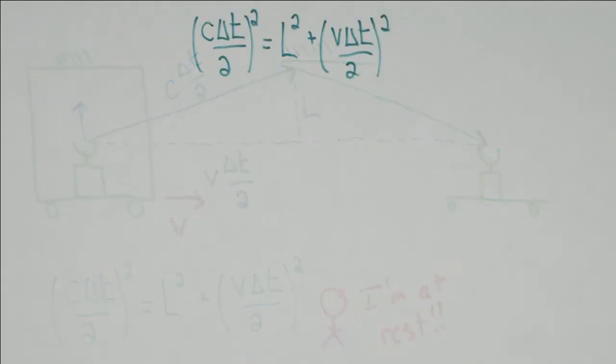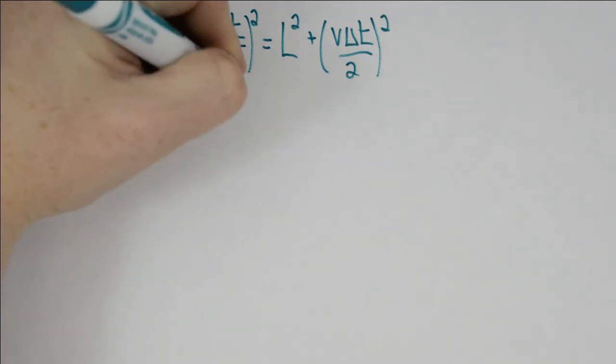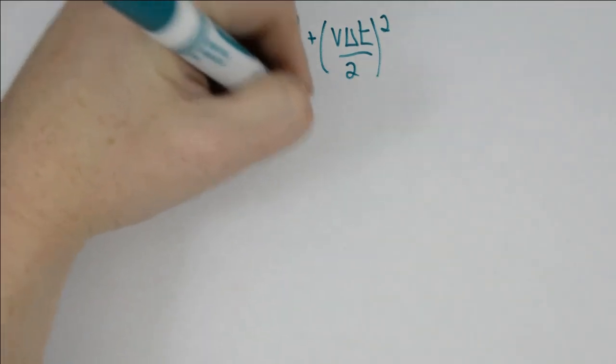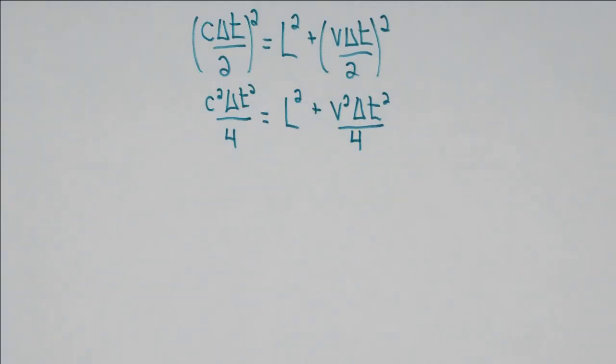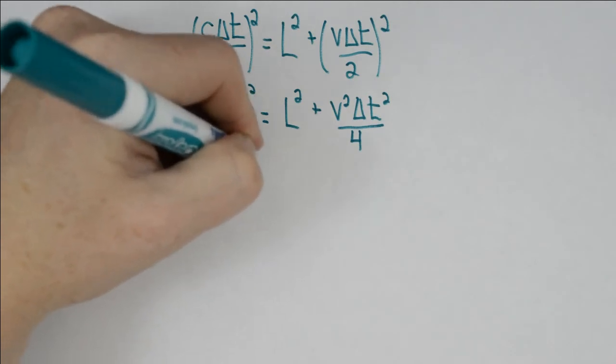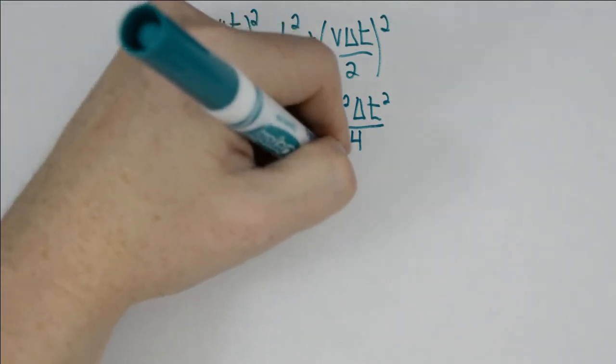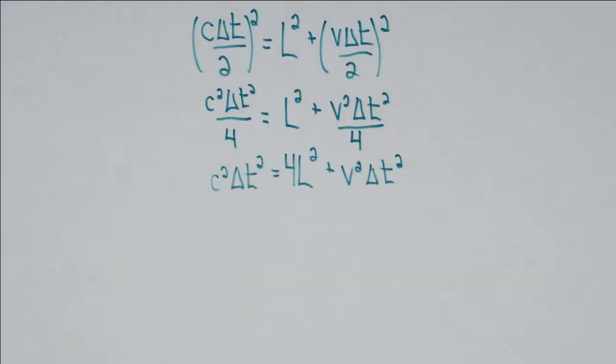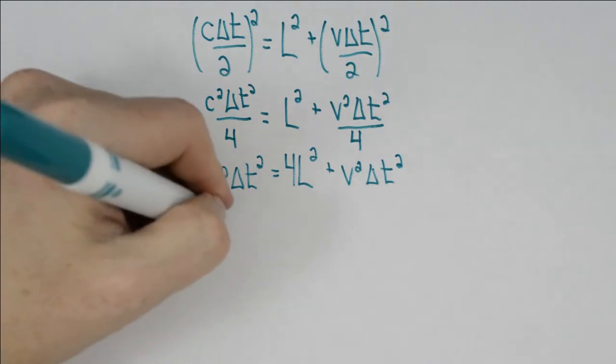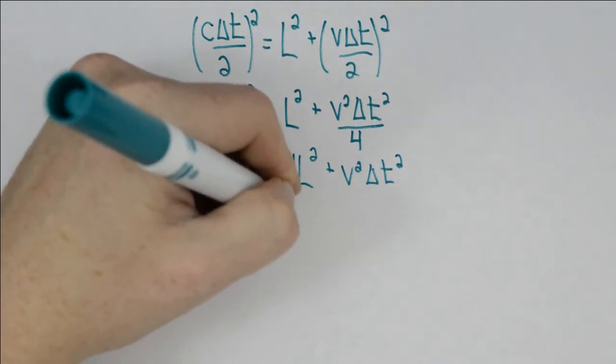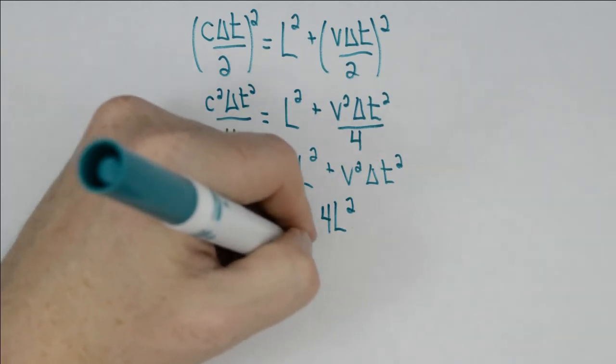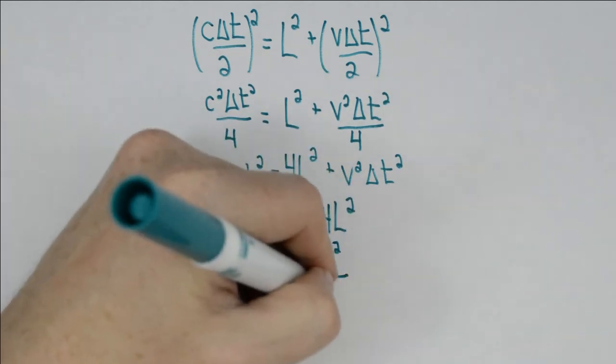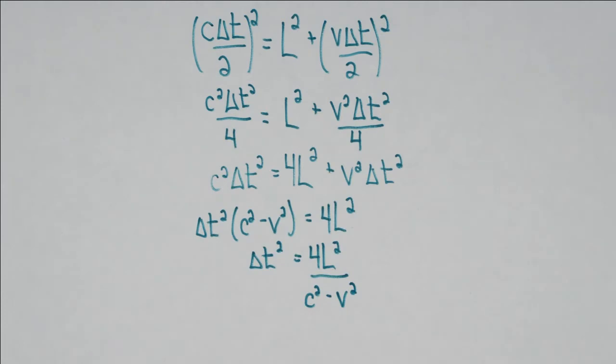At this point we can work out Einstein's result with just a little bit of algebra. The first thing we're going to do is square everything that's inside the brackets. We then notice that there's a 4 in the denominator of two of the terms, so we multiply both sides by 4 just to clean things up a little bit. At this point we collect our delta T squareds and then we isolate delta T squared by dividing both sides by C squared minus V squared.